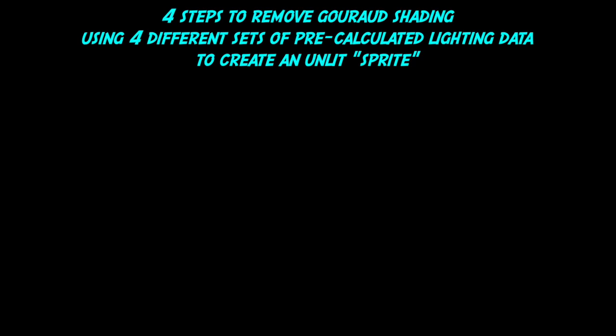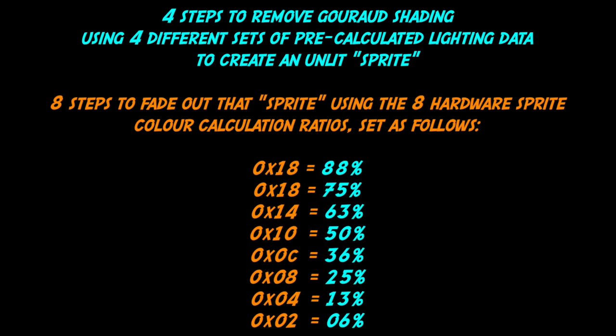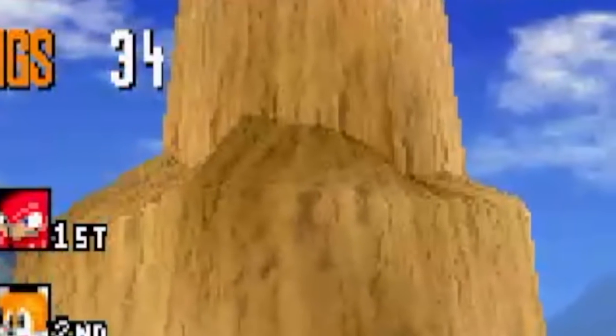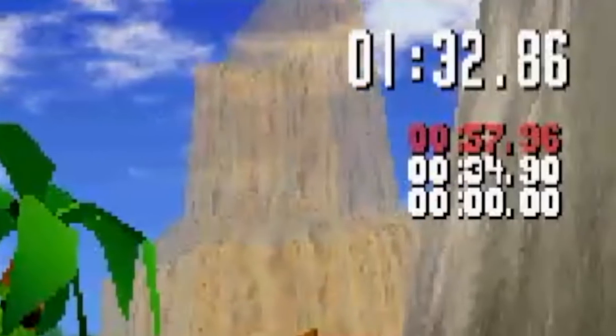So I first used 4 steps to remove the shading, and then 8 steps to fade out the flatly lit sprite. The 8 calculation ratios show the percentage of each sprite visible for each step. These two techniques combined became known as 12-layer transparency. So let's have a look at the mountain combining both techniques. You can see the lighting being stripped away first, and then the now flatly lit polygons fading out to nothing.